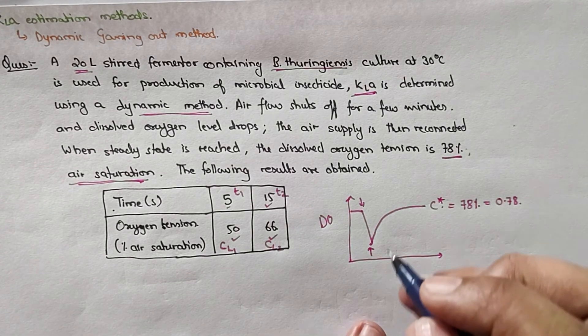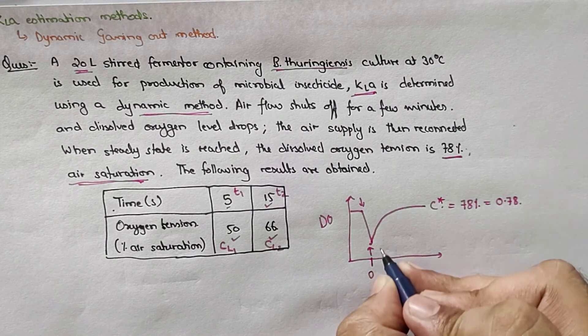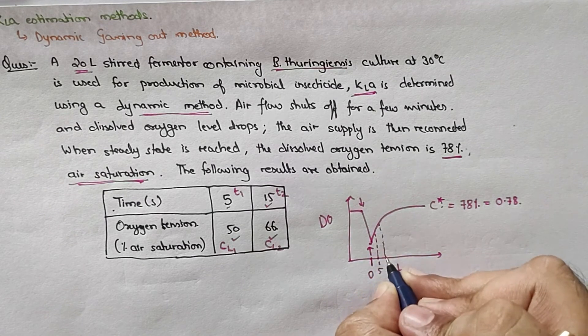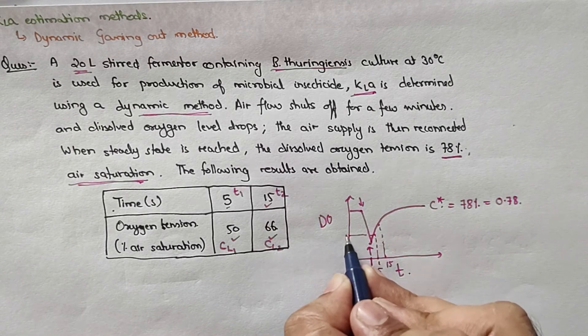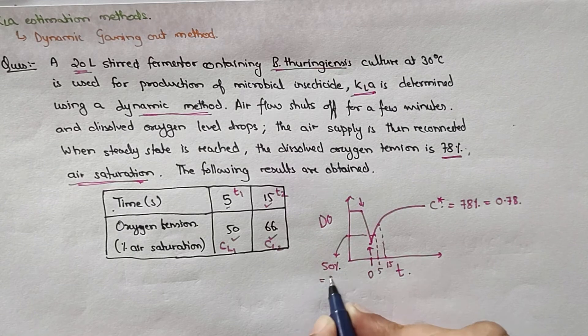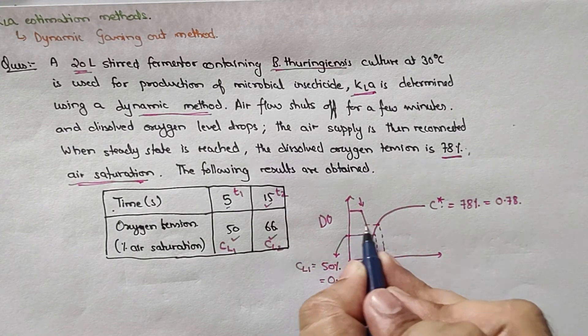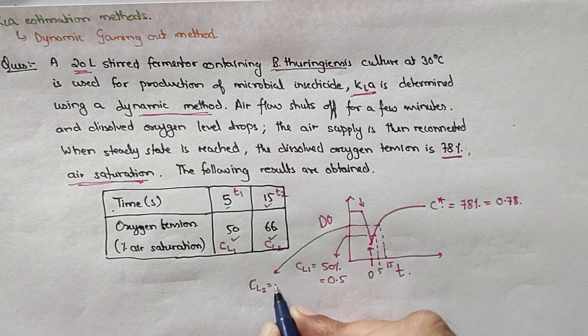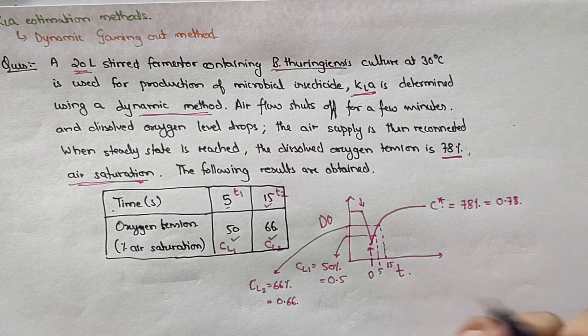So let's plot it on the graph. We will consider this point as 0 then 5 seconds. This is 5 and suppose this is 15 seconds. So at this point my concentration is 50 percent, this means 0.5. So this is CL1. At this point where my CL2 is, CL2 is equal to 66 percent, that is equal to 0.66.